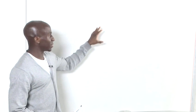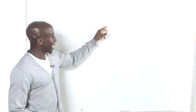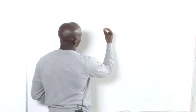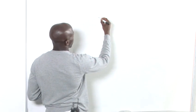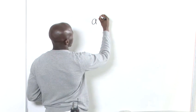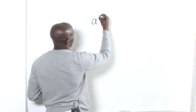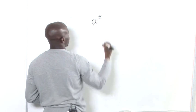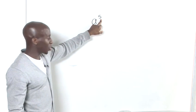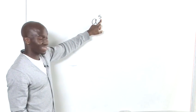An exponent is basically the number that you find as a superscript to another number. So we might have something like this: a to the power of 5. This is the power, more commonly known as the indices.